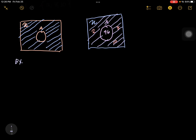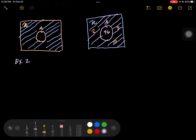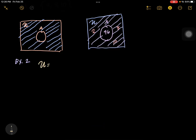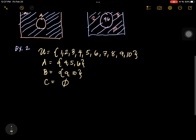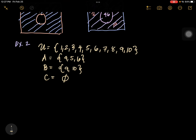Example number 2. If our universal set is {1, 2, 3, 4, 5, 6, 7, 8, 9, 10}, set A = {4, 5, 6}, set B = {9, 10}, and set C is an empty set — meaning there are no elements inside that set.